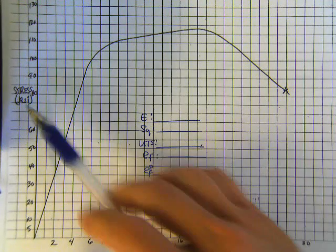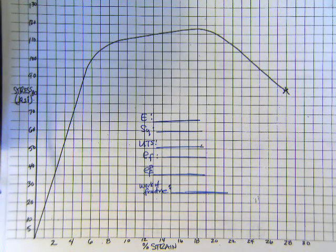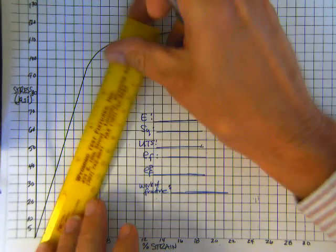Looking, we have stress here in KSI and we have percent strain. Remember, percent strain is a unit. So before we use it in calculations, we'll have to convert that to a regular strain or just a strain which has no units.